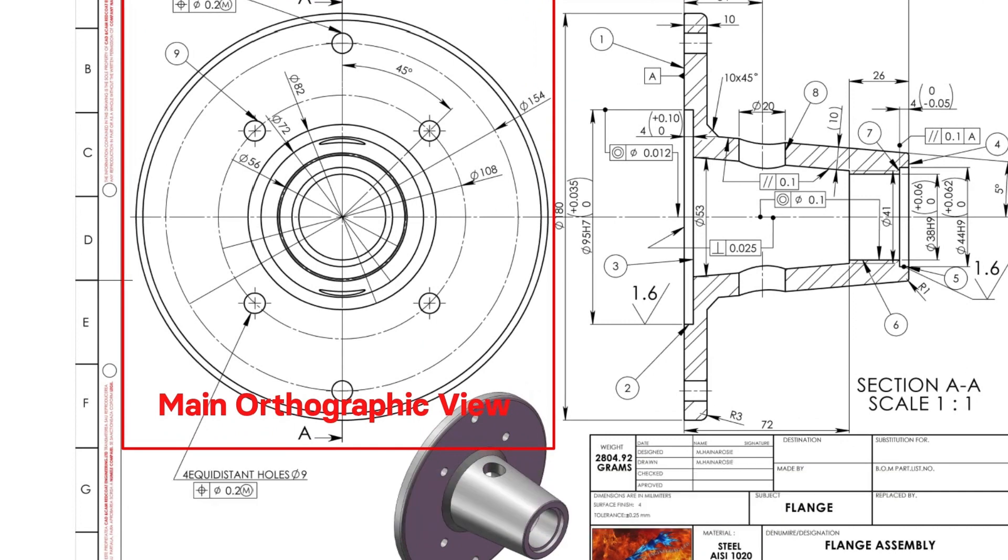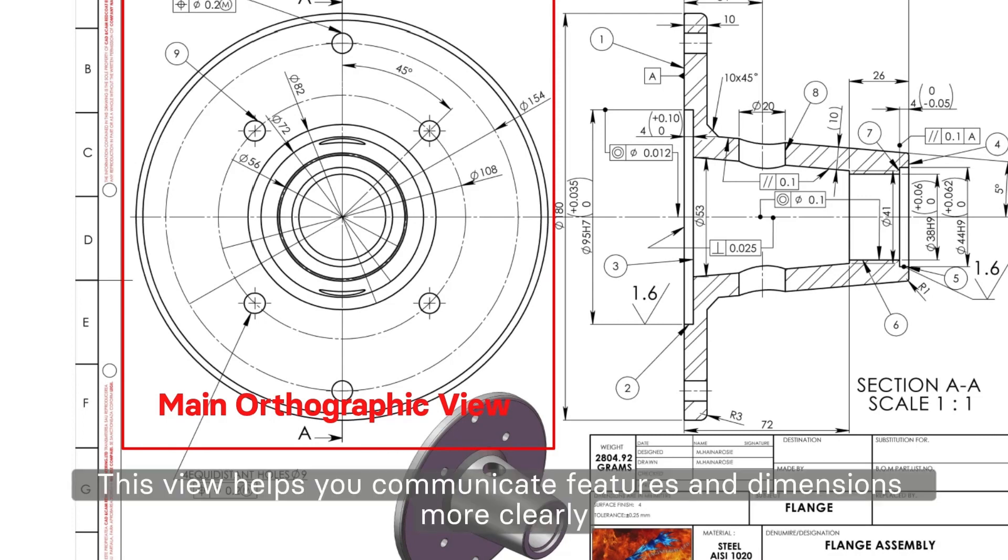is the main orthographic view. It is a two-dimensional depiction of the object, showing its actual shape. This view helps you communicate features and dimensions more clearly.